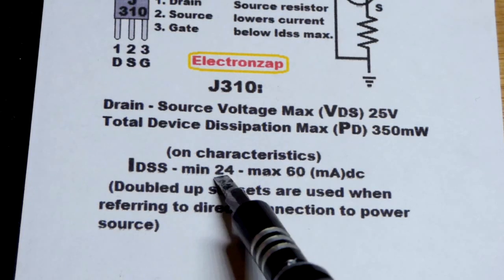These don't have a specific one. So if you grab a J310, maybe it'll be 60 milliamps. If you test the IDSS, you never know, or maybe it's down to 24. Mine happens to be like 33 or something, according to this test, right in that range.